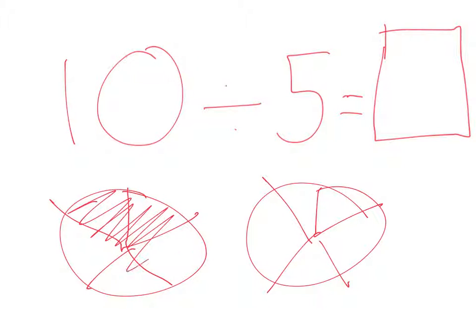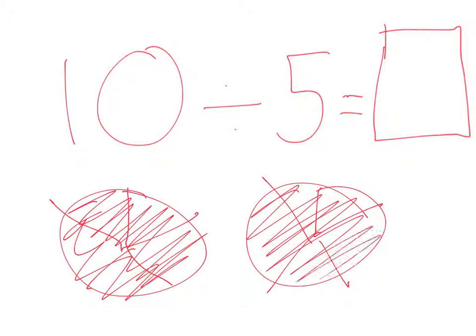There is no remainder. There is no remainder because 5 is double of 10.